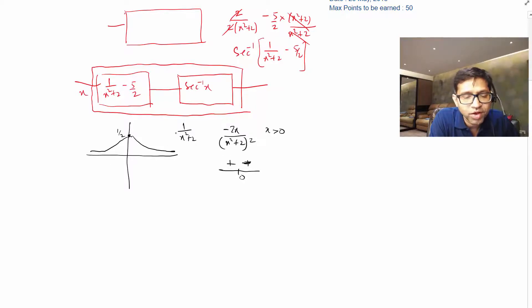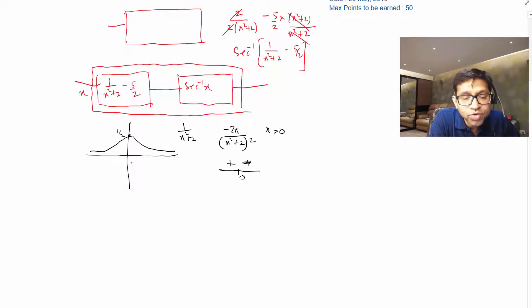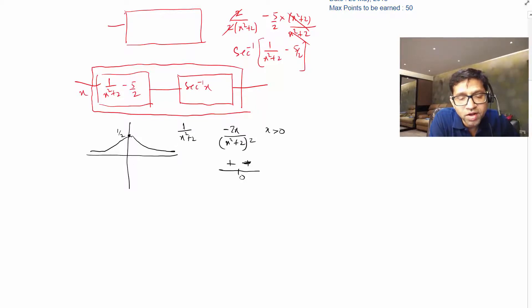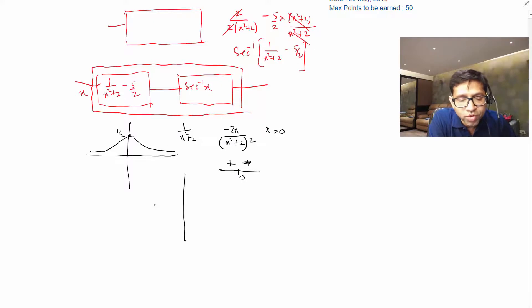So there is a local maximum at x = 0, where the value is 1/2. The range of 1/(x² + 2) is (0, 1/2]. Now subtracting 5/2 shifts the graph down, giving us a range of (−5/2, −2] for the inner expression 1/(x² + 2) − 5/2.